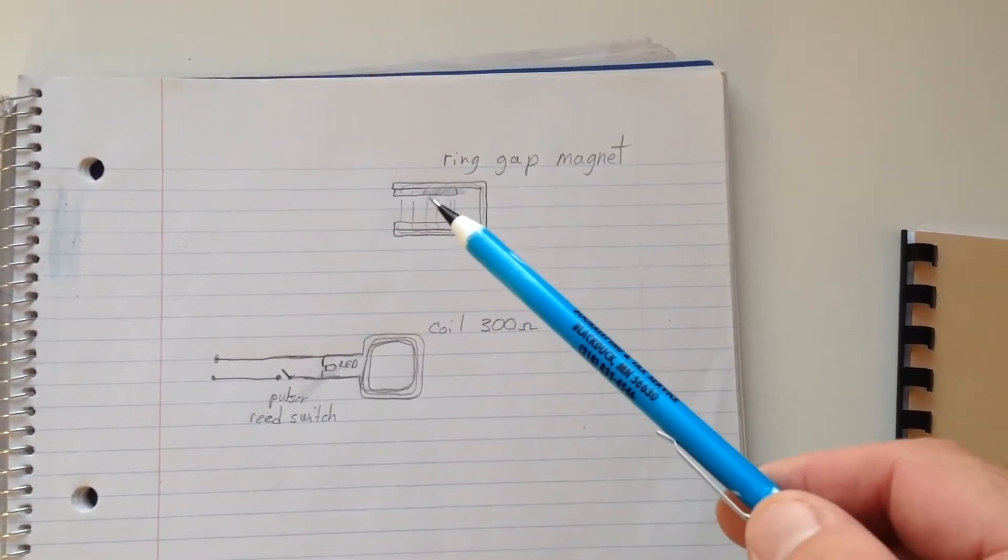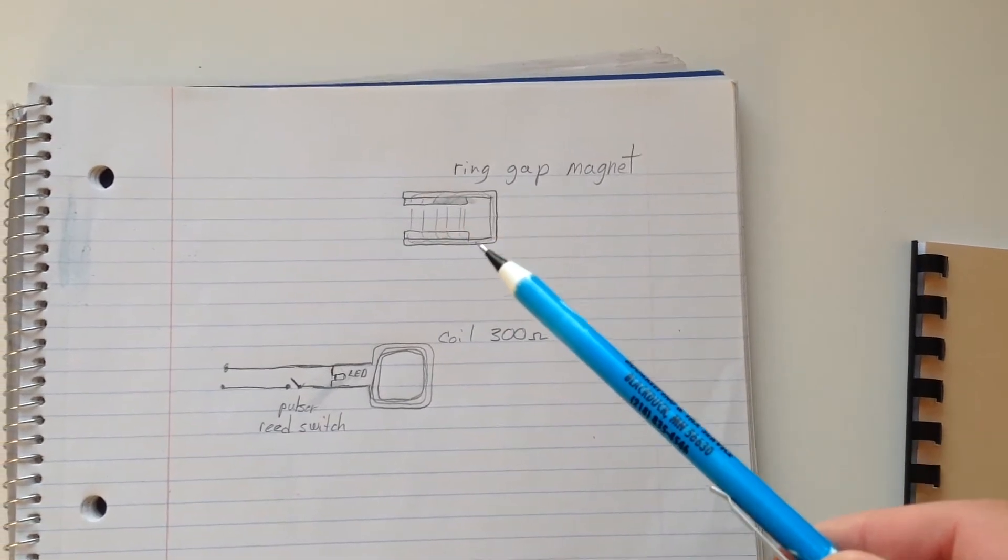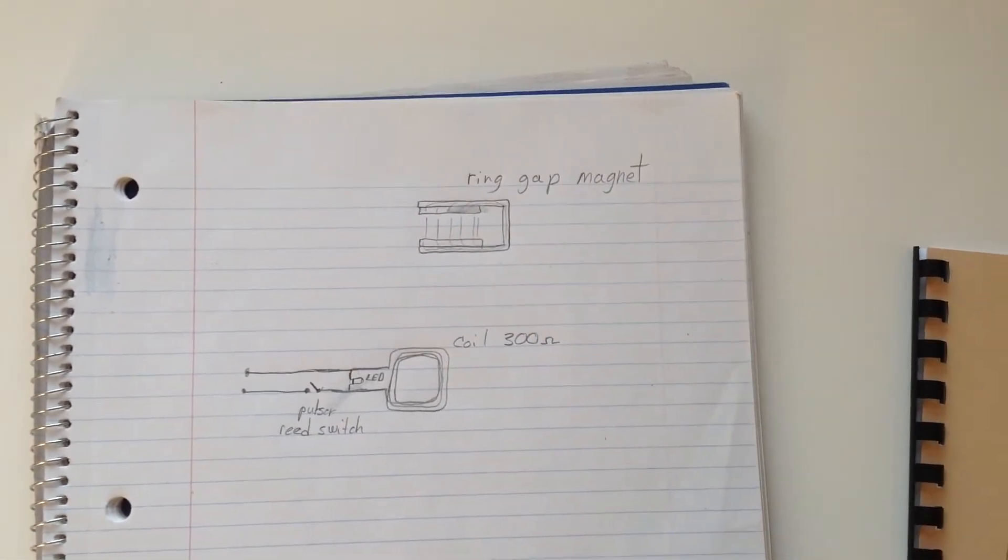This is a ring gap magnet. See all the magnetic field flows through there. The lines of force are pretty intense between the magnets.